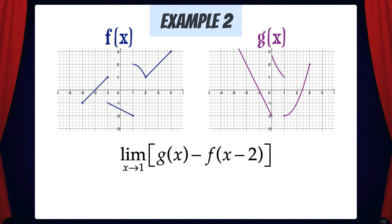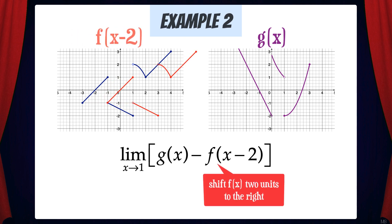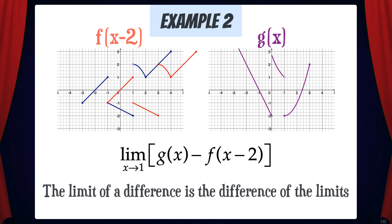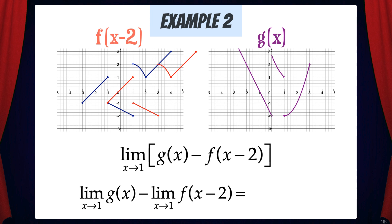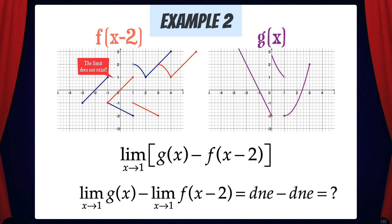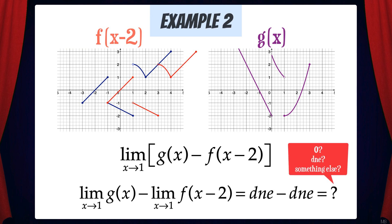Let's do another example. Suppose we need to find the limit of g minus f(x-2) as x goes to 1. What may seem especially confusing about this limit is the f(x-2). Therefore, I'm going to call this limit WICKED. However, it's not that tricky — all we need to do is break it down. Remember, f(x-2) just means we have the f function shifted two units to the right. The limit of a difference is the difference of the limits, so this gives us the limit of g as x goes to 1, minus the limit of f(x-2) as x goes to 1. The limit of g as x goes to 1 does not exist, and the limit of f(x-2) as x goes to 1 also does not exist. So this gives us 'does not exist minus does not exist' — does that equal 0, does not exist, or something else? And this is another reason why this limit is WICKED.